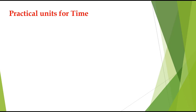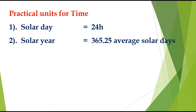Now let us discuss practical units for time. We are discussing practical units for length, mass, and time because they are the fundamental quantities. One solar day is equal to 24 hours. It is the time taken by the Earth to complete one rotation about its own axis with respect to the Sun.